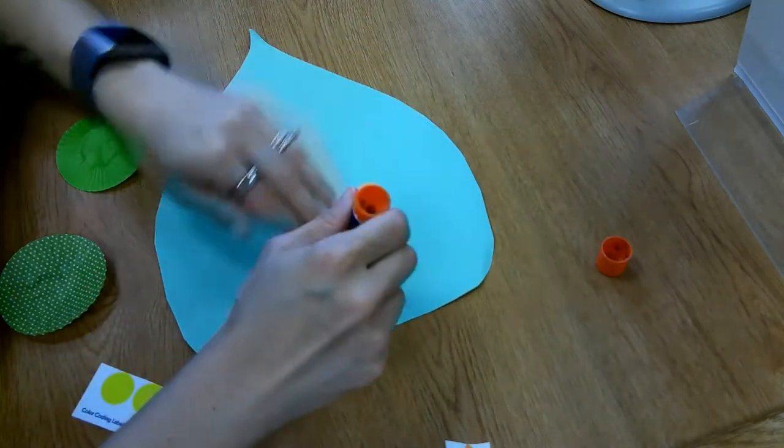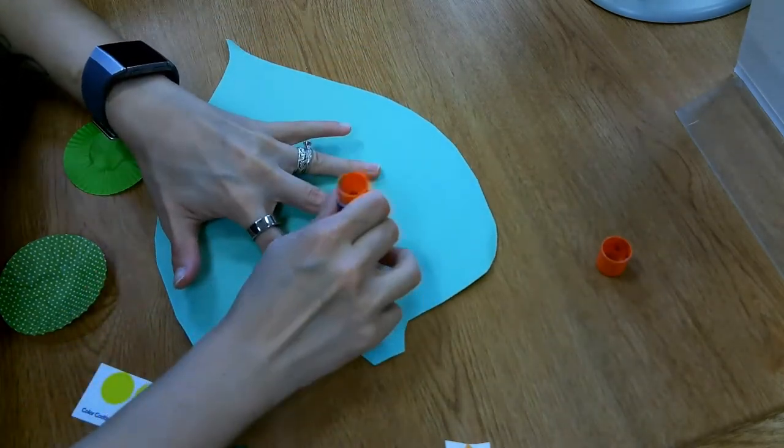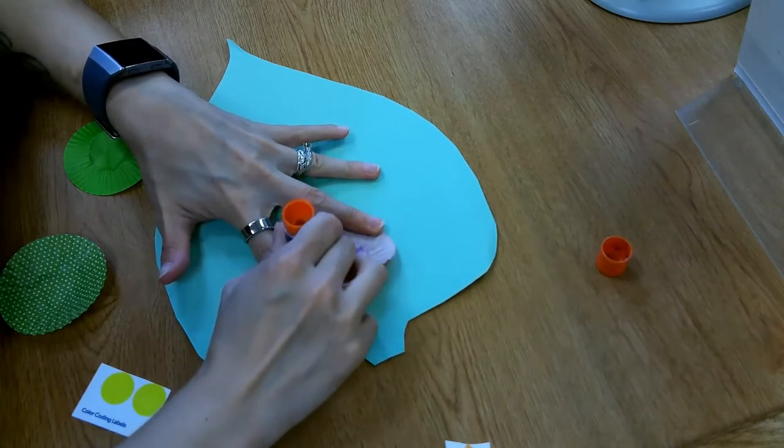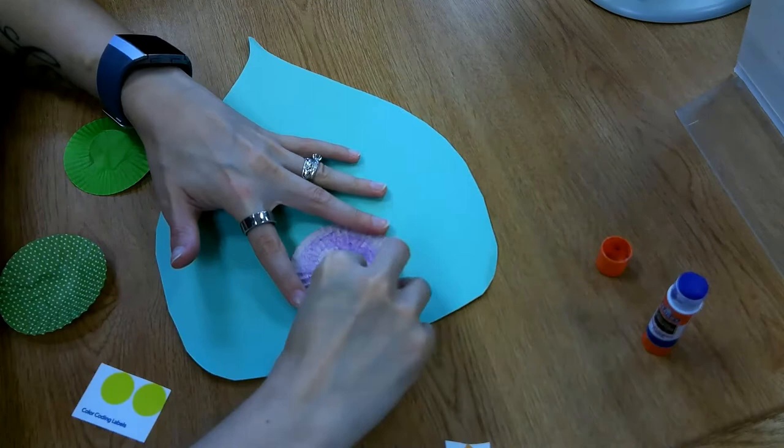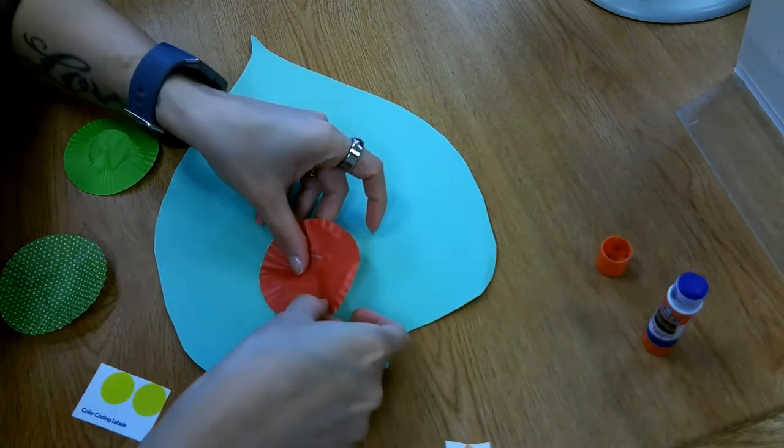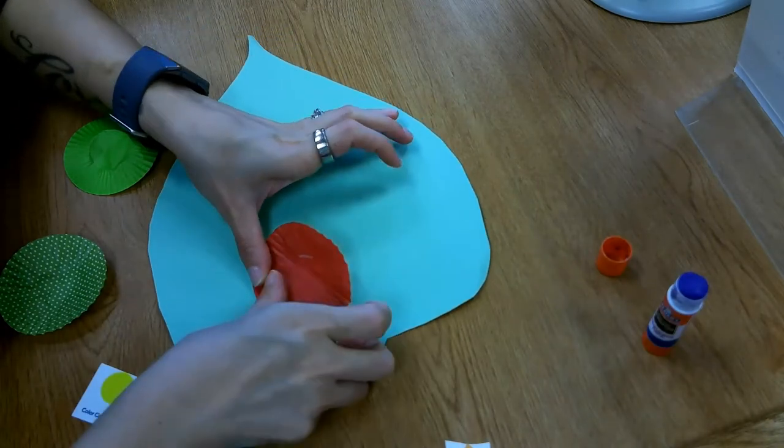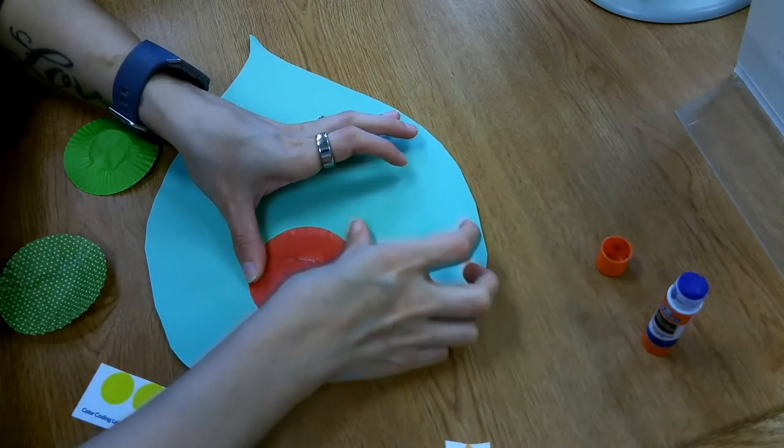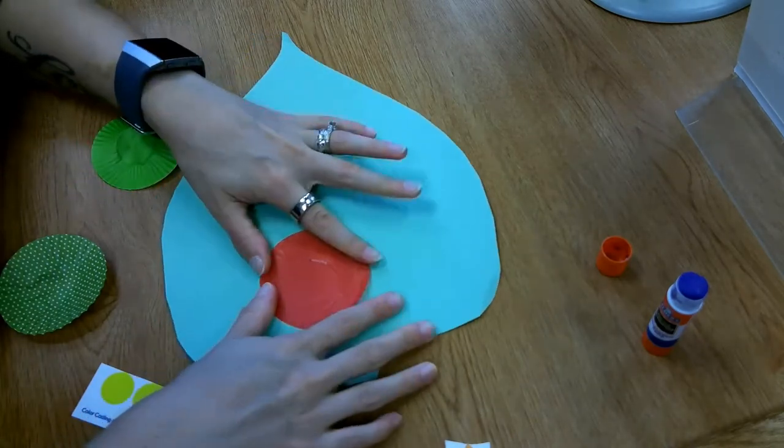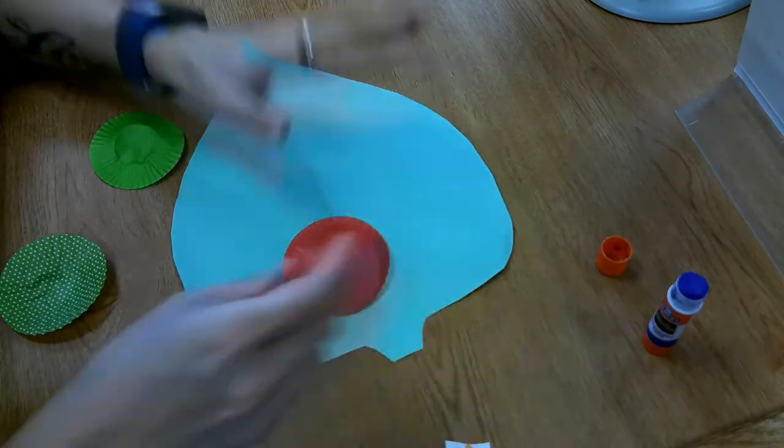So I'm going to go ahead and flip my red liner over because we want to put the glue on the part that's not so bright so that our bright red shows really well. And we'll press him down gently all onto the paper. There, we've got his head.